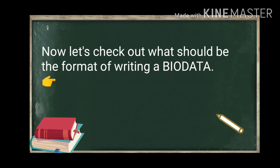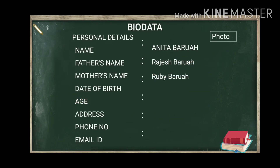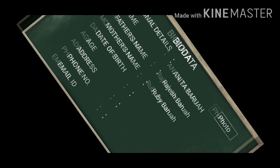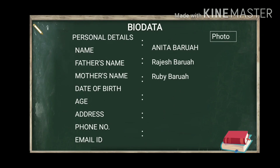Now let's look at the format for writing a bio data, as shown in the next slide. There is a proper alignment of the words. At the top, the title should always be 'Bio Data.' The first section comprises your personal details: name, father's name, mother's name, date of birth, address, phone number, email, and so on. The name of the candidate should always be mentioned in block letters — not the other entries.